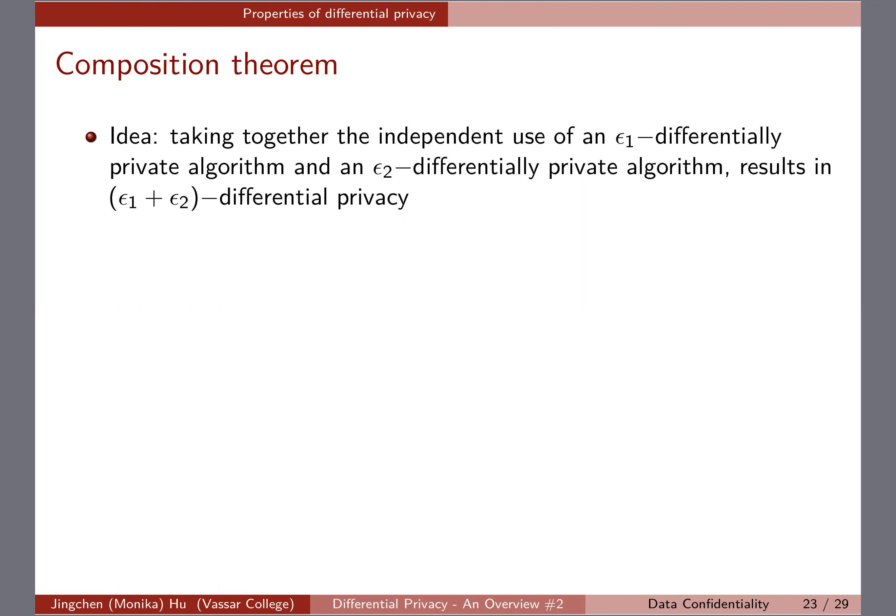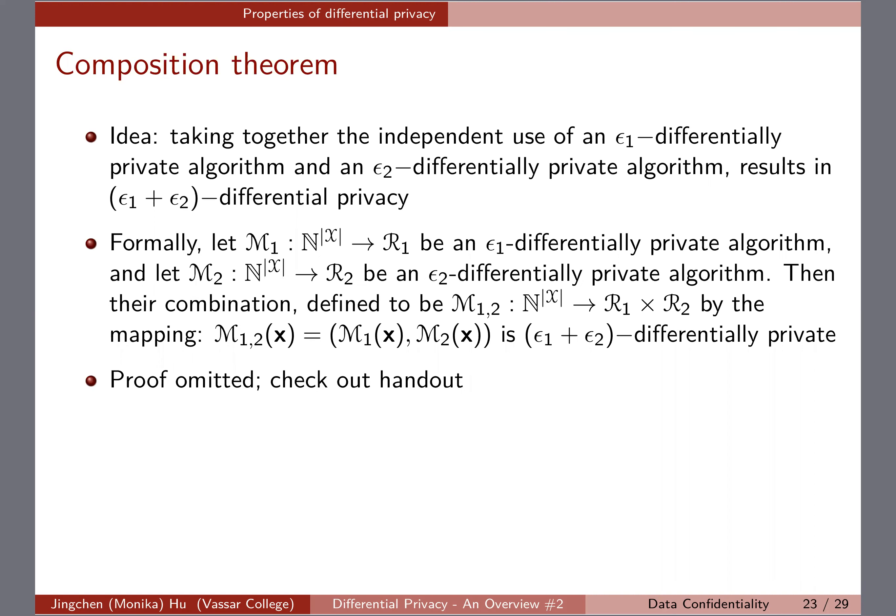So if I have ε₁ for my first part and ε₂ for my second part, both of them are privacy budgets. When we combine them, we are essentially combining the privacy budgets together. Formally, we have this result — I won't go into the details, but it's just putting the idea into mathematical form. The handout includes the proof if you want to take a look.